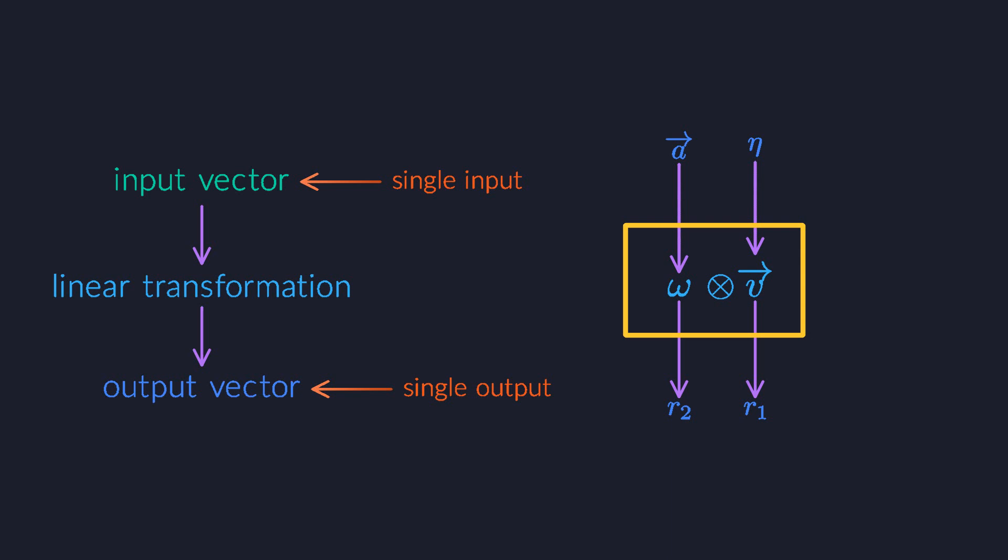On the right we still see a matrix as a linear function, but this time it takes two inputs: a vector and a dual vector. The output this time is a real number. These two views seem completely contradictory. Which is it? Does a matrix take one input or two? Does it produce a vector or a real number? What a mess.